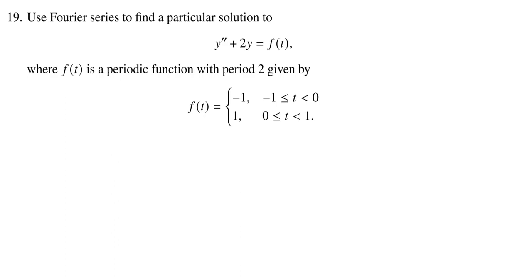And this time, to solve this differential equation, we're going to use a Fourier series to find just a particular solution. Now, in problem 18, we were able to find a Fourier series for the forcing function f(t), given by this two-periodic function here. So, just recall that the Fourier series for f(t) is given by 4 over π times the sum over odd n, and then we have sine nπt over n.